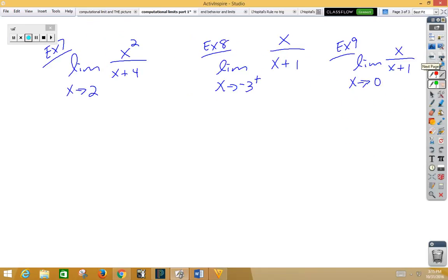In our next example, now our function is a little more complex. Now we've got a rational function. Still, the first thing we try is plugging in. If I plug in a two on the top, we get a four. If I plug in a two on the bottom, we get a six. Four-six can reduce to two-thirds.